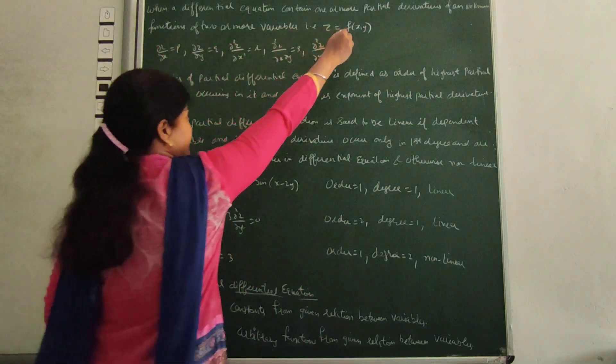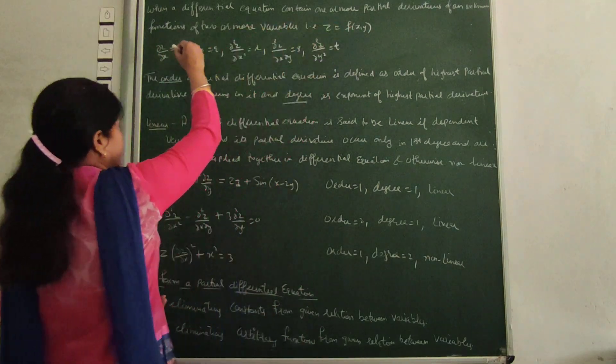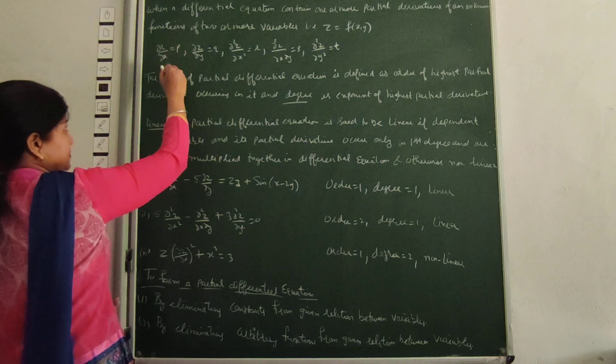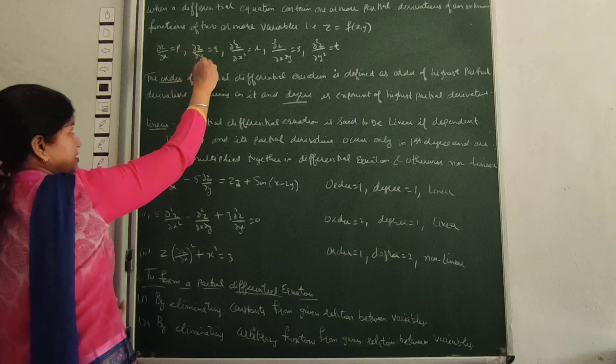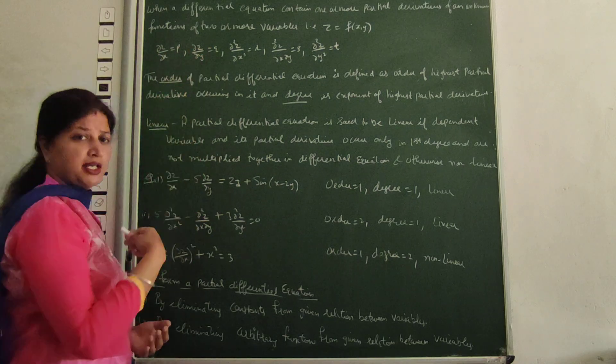That equation is called a partial differential equation. So our partial derivatives exist: curly z by curly x, and curly z by curly y.